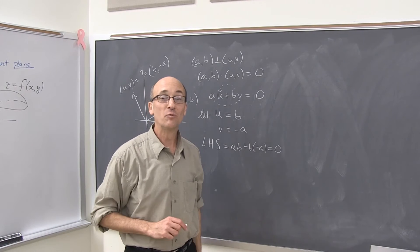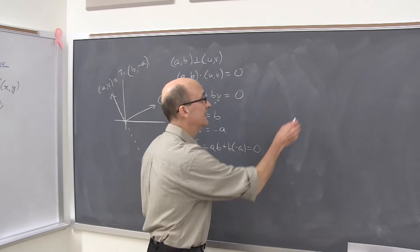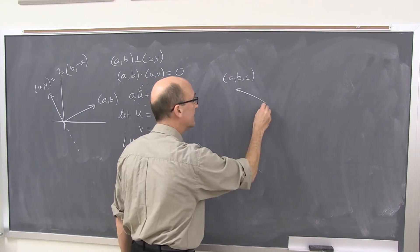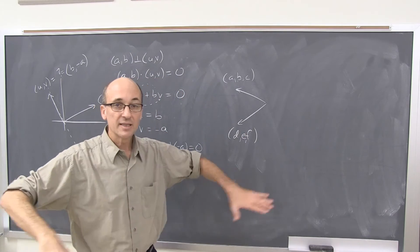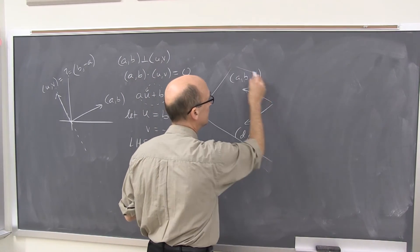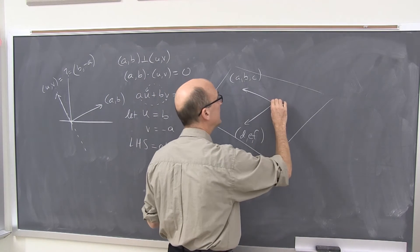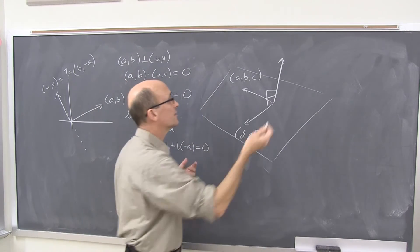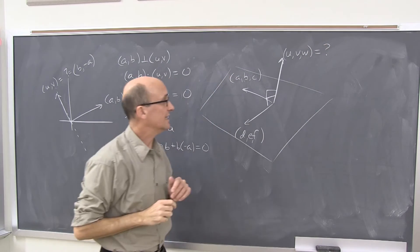Let's move on one dimension up to the problem of finding normal directions in three-dimensional space. This time we have two given vectors: (a, b, c) and another one here, (d, e, f). Together those two vectors fill out or span a plane. Here's the plane that they live in. And we're looking for something perpendicular or normal to this plane at right angles to both of the given vectors. This one is the unknown. Let's call it (u, v, w). The problem is what is it?